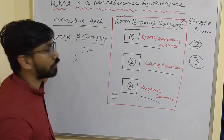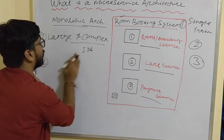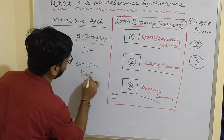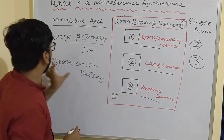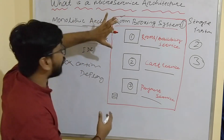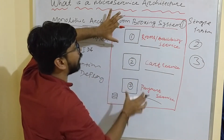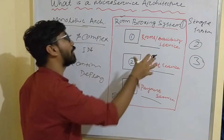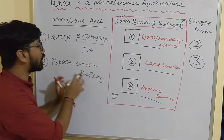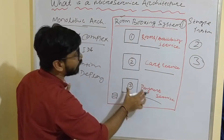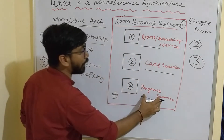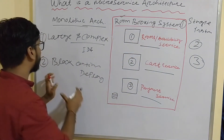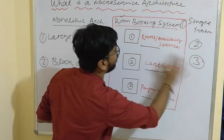The second drawback is blocked continuous deployment. This means you cannot deploy your application continuously because you have to take down your production environment for some time before deploying. Continuous deployment is blocked because all the services are tightly coupled. If you make any changes in the payment service or car service, you have to change the entire application in the single instance before you can release your application to the production environment.